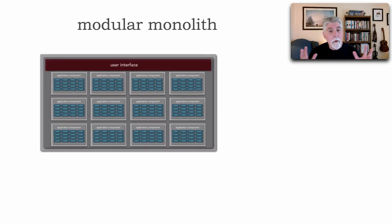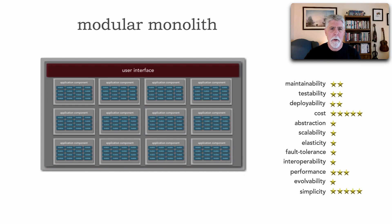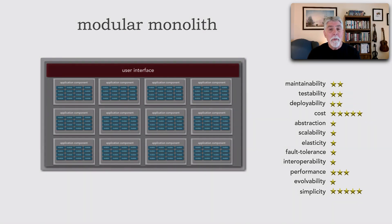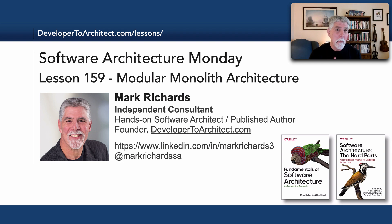The modular monolith is a very popular architecture style. To learn more, you can refer to the book Fundamentals of Software Architecture. Also, architect Simon Brown in the UK has a lot of material focused on the modular monolith. This has been lesson 159, our second architecture style in our journey through all eight. Thanks for listening — stay tuned in two weeks for lesson 160, where we'll take a look at the microkernel architecture style.